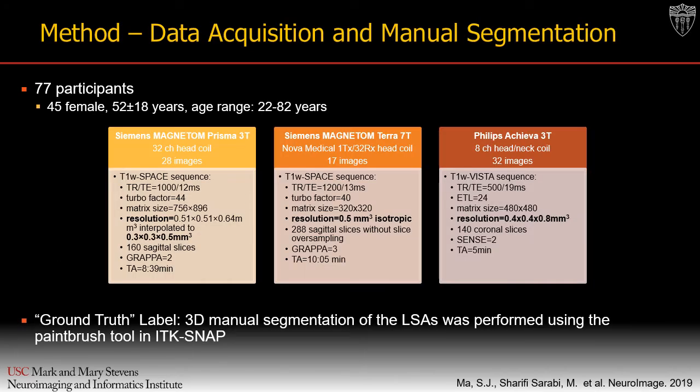For data collection, black blood images were acquired from 77 participants, ranging in age from 22 to 82 years old. Image volumes were acquired on a Siemens 3T Prisma, a Siemens 7T Terra, or a Philips 3T Achieva system using the T1 SPACE or VISTA sequence, respectively. The images from the three systems had various resolutions and imaging parameters.